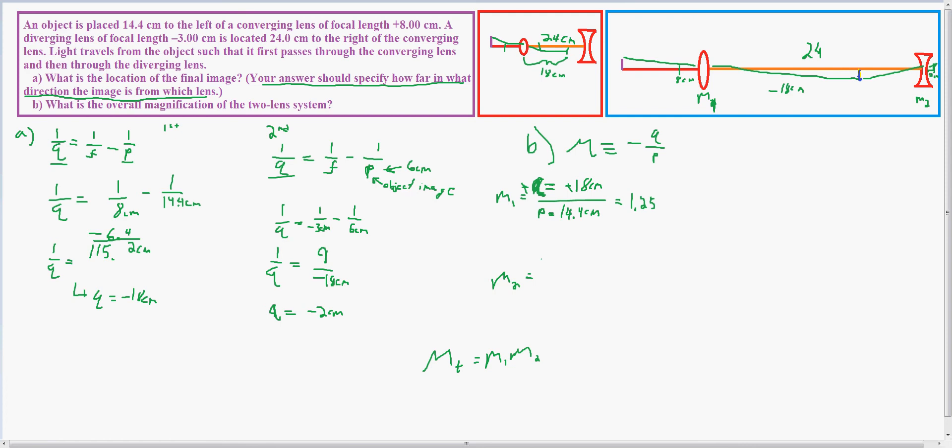And for up here, we'll have negative Q, which equals negative 2 centimeters divided by 6 centimeters, which is P. Again, these negatives cancel out, and we are left with 1 third.